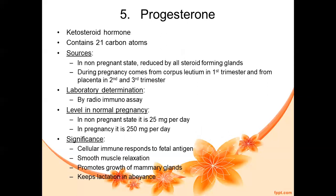Next is progesterone, a keto-steroid hormone containing 21 carbon atoms. In the non-pregnant state, it is produced by all steroid-forming glands. During pregnancy, progesterone comes from the corpus luteum in the first trimester, and the placenta produces progesterone in the second and third trimester. So corpus luteum and placenta both produce progesterone during pregnancy.